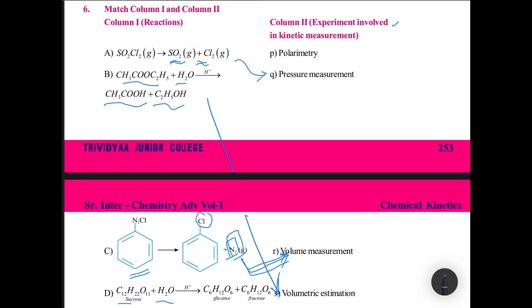Then sucrose hydrolysis to give you glucose and fructose. Sucrose hydrolysis to give glucose and fructose. In this case, glucose is optically active, fructose is also having chiral carbons, optically active. For this purpose, polarimetric.